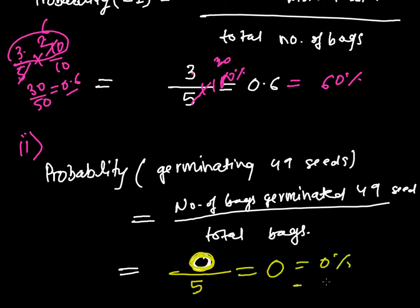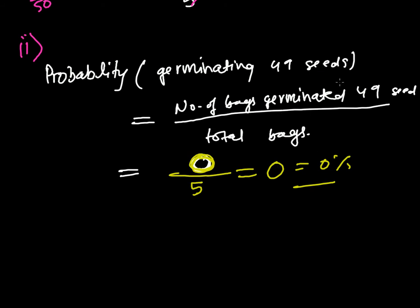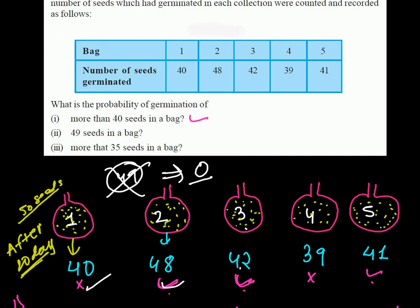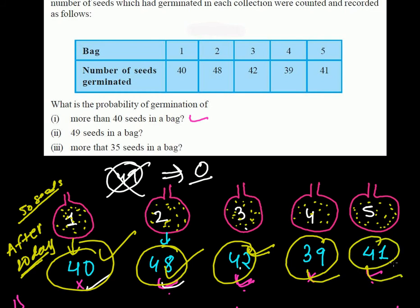The probability is 0, which means 0%. In this experiment there was no case where any bag produced exactly 49 germinated seeds. Now the third and last question asks: what is the probability of more than 35 seeds germinating in a bag? In bag 1 there were 40 seeds — that's more than 35. Bag 2 had 48, more than 35. Bag 3 had 42, more than 35. And 39 is more than 35, and 41 is also more than 35. So all the bags were producing more than 35 seeds.